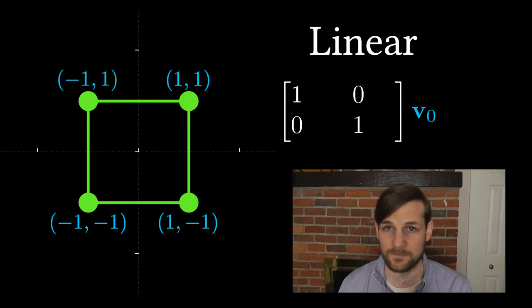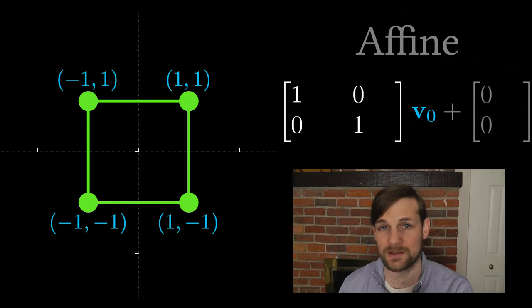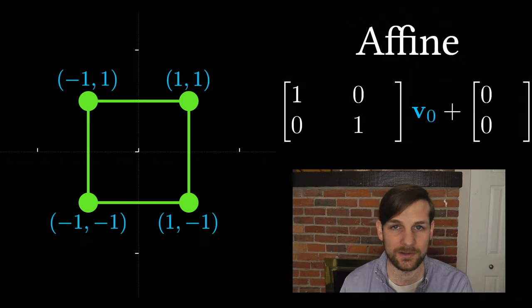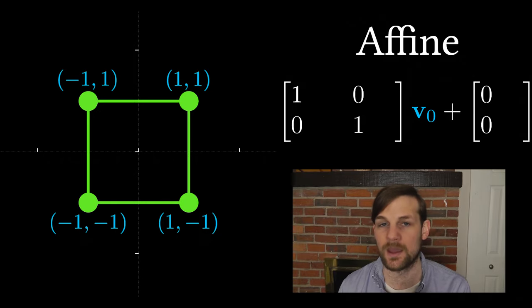Here we use each vertex as a vector and apply a transformation matrix to it via matrix multiplication. Now affine transformations take this one step further by also allowing for us to translate the shape with an additional xy offset vector.